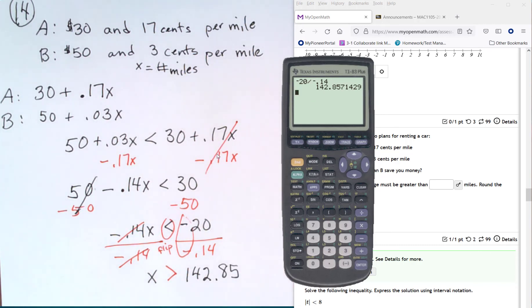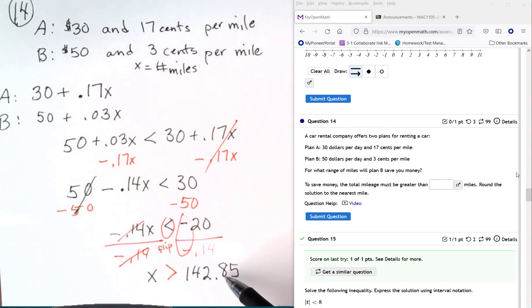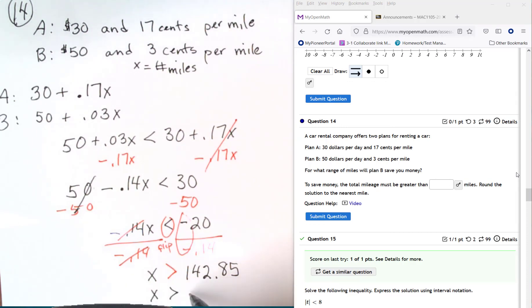And that's far enough. The directions say round the solution to the nearest mile. Right? Your mile is your whole number. So you look to the right. This time the 8 is going to push it up. So we're going to have x is greater than 143 miles. So more than 143 miles, Plan B will be a better deal.